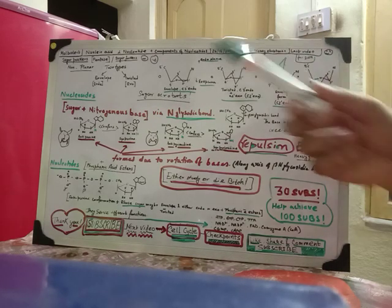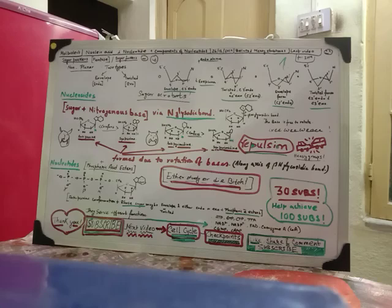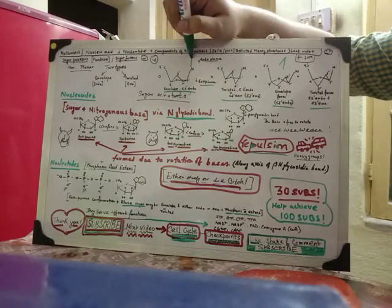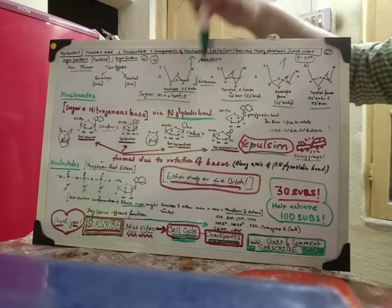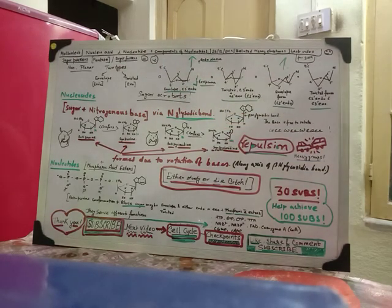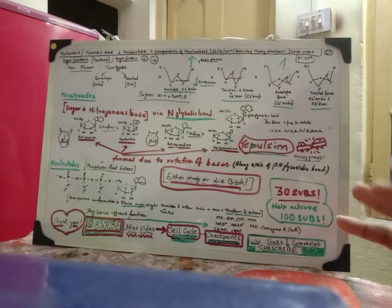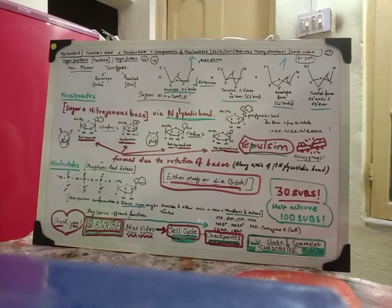We have the endo plane pointing upwards and the exo plane pointing downwards. Whatever is present on the upper side is the endo plane, and whatever is present down below is the exo plane. Sugar puckers are essentially pentose puckers present in nucleotides and are non-planar in nature. This non-planarity is known as puckering.